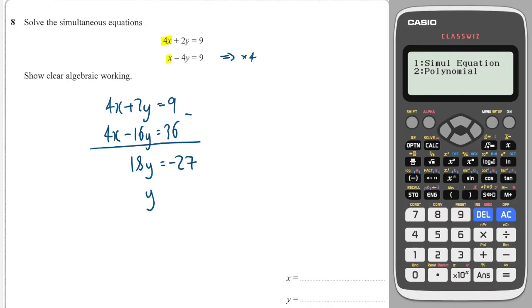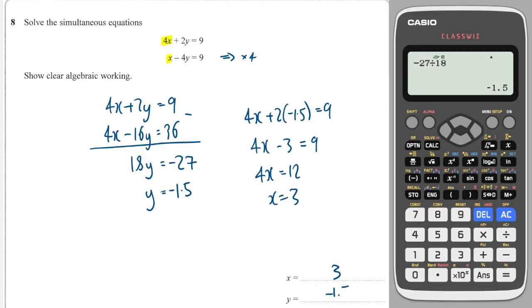So I'll go to my calculator, and I will do minus 27 divided by 18 to get minus 1.5. And I will substitute it back into the top equation. So I'll get 4x plus 2 lots of minus 1.5. So that's 4x minus 3. So 4x is equal to 12. So x is equal to 3. So we have 3 and minus 1.5.